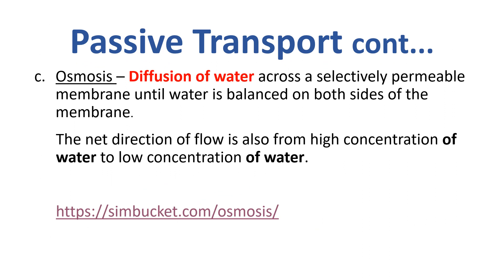Osmosis, the third method of passive transport, is quite different to diffusion because we're not talking about chemicals dissolved in a material like food molecules or oxygen — we're talking about water. The most simple definition is that osmosis is the diffusion of water, but importantly it has to be across a selectively permeable membrane. Osmosis is when water moves across a semi-permeable membrane until the concentration of free water molecules is balanced on both sides, moving from high concentration to low concentration just like diffusion.